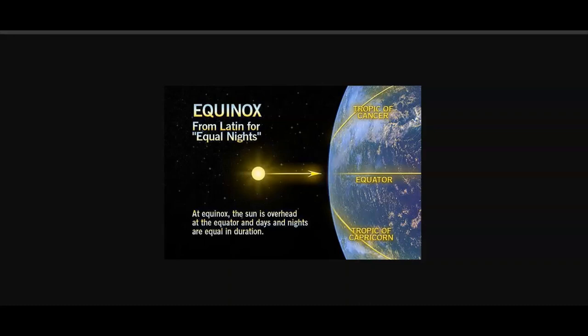So equinox simply means equal nights in Latin. And put it simply, it's the midway point of the sun's journey through the tropics. So this happens twice a year, once on its journey north and again on its way south.